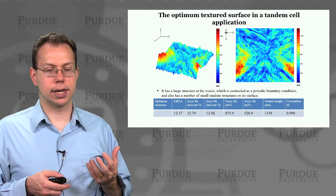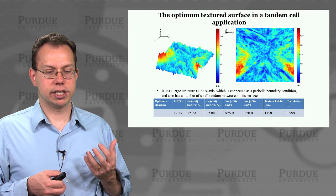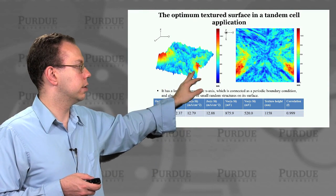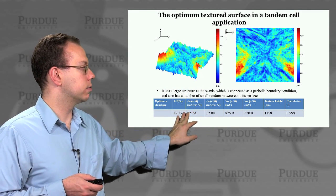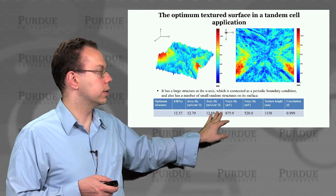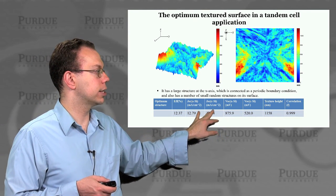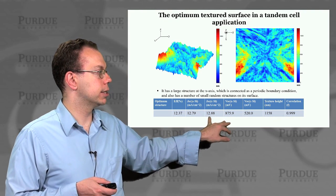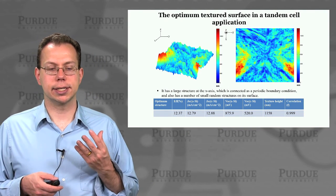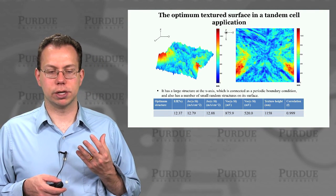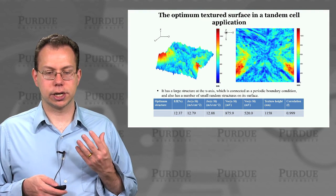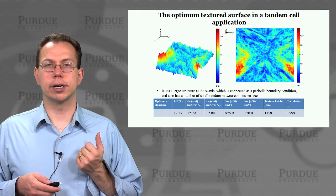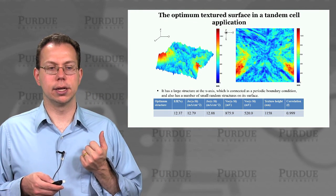And so just looking at an example of the efficiency associated with tandem cells. So here's like basically a textured surface, and then looking at what is the efficiency of amorphous silicon, crystalline silicon tandem. We're able to actually design the texturing so that we have very strong current match, like both the amorphous and crystalline silicon have JSC about 12.8 milliamps per square centimeter. And then the texture height and correlation factors are given here. And so that actually tells us what are the optimal conditions for making a good tandem cell.